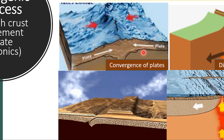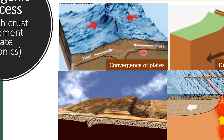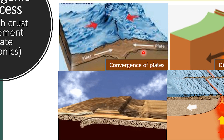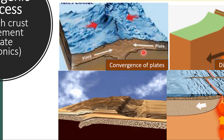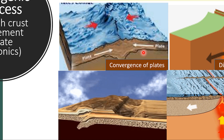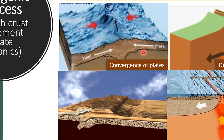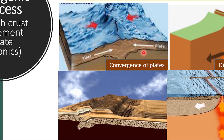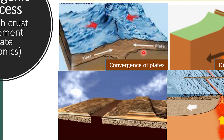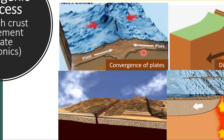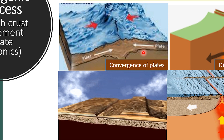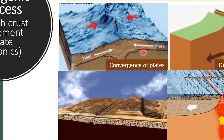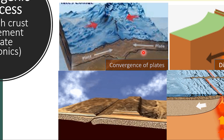When two plates collide, they may cause rock to be thrust upward at the point of collision, resulting in mountain building. For example, the Himalayas were formed by the collision of the Indo-Australian plate with the Eurasian plate.